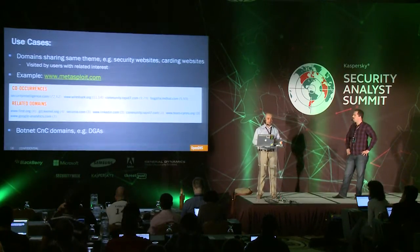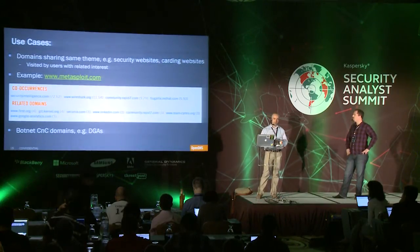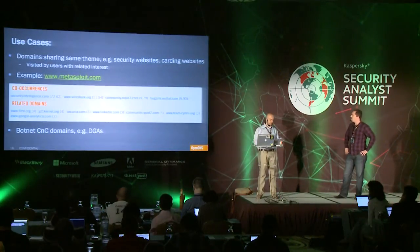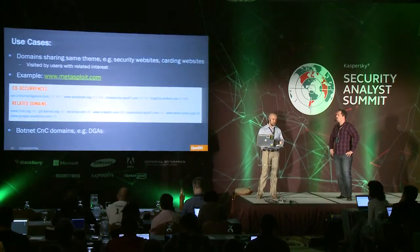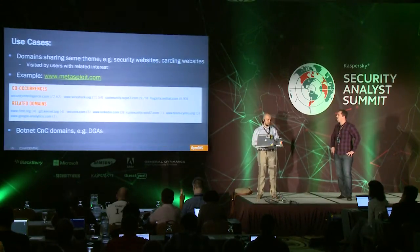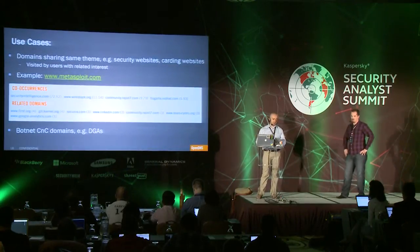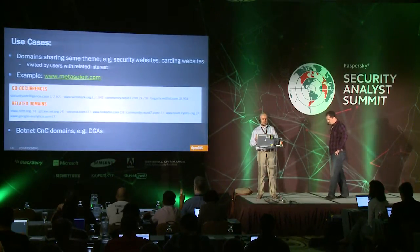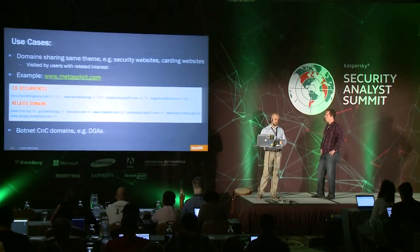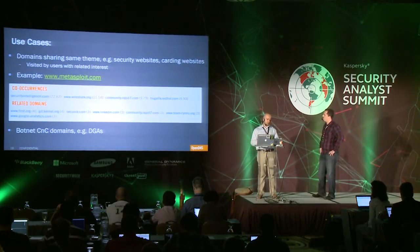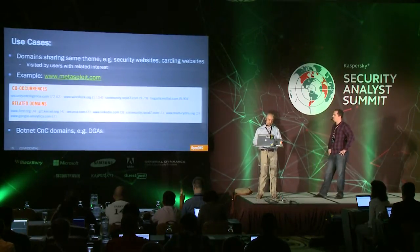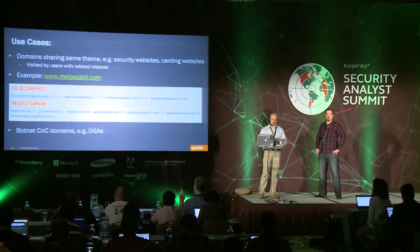We use it to track domains sharing the same theme or campaign. For example, security sites — people who go to metasploit.com will also go to securityintelligence.com, Wireshark, Rapid7, Bugzilla.redhat, etc. We also use it for tracking carding sites and hacking platforms, because visitors to these sites will also go to related websites. Most importantly, we use this to track botnet C&Cs, especially DGAs, and also for tracking infection chains between compromised sites leading to exploit kit infections.